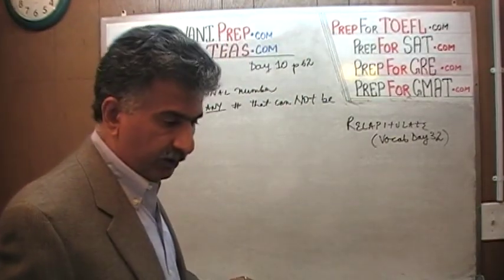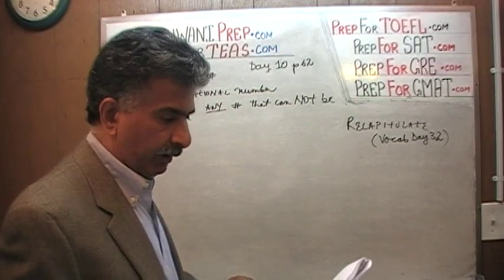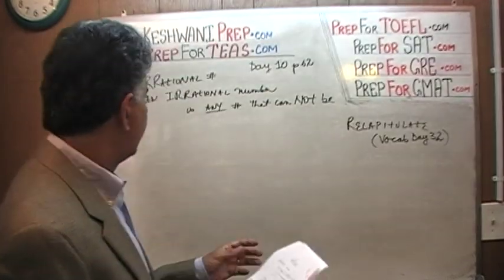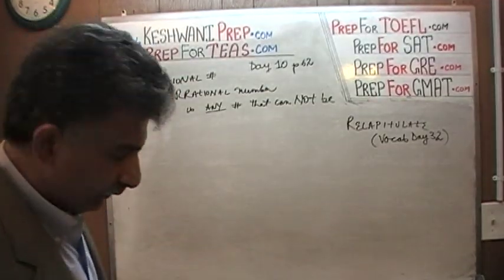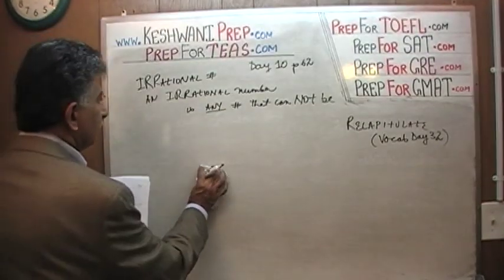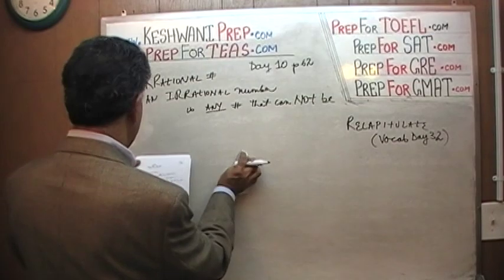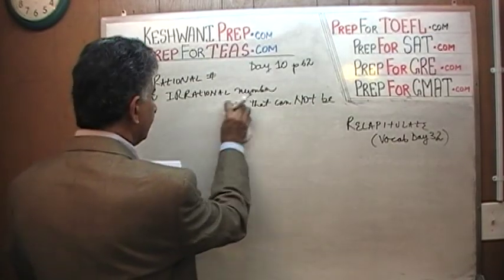So what is an irrational number? An irrational number is a number that cannot be written as a fraction.